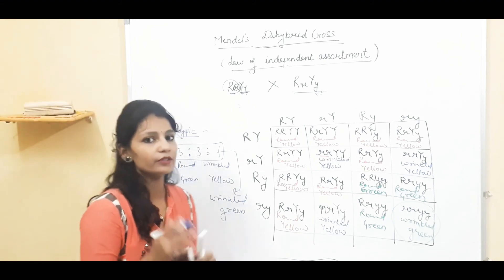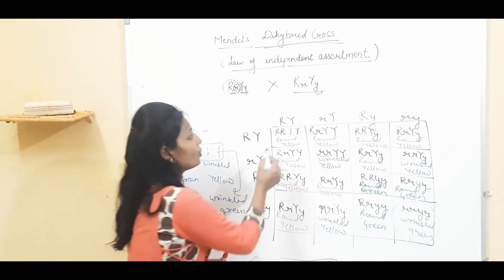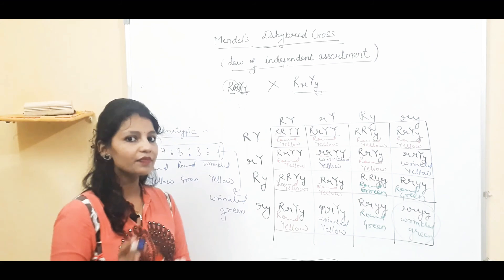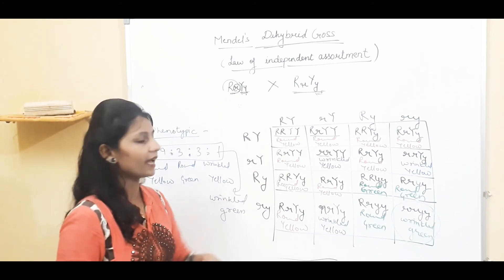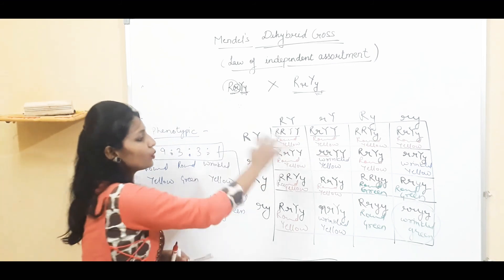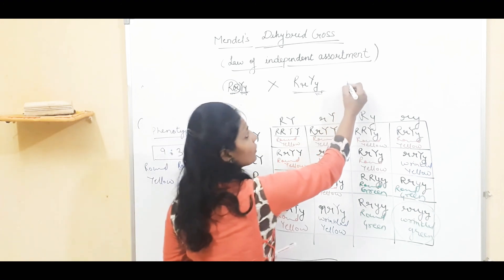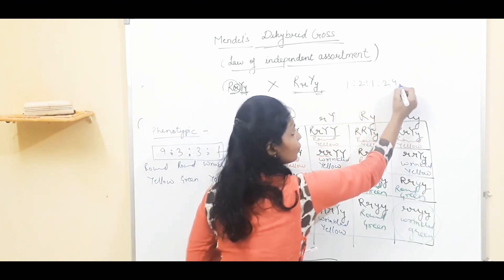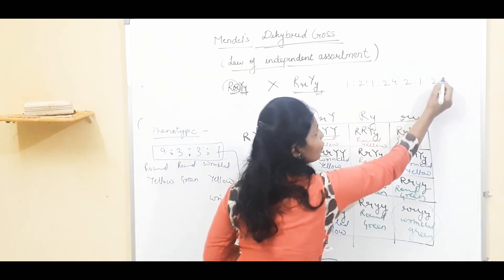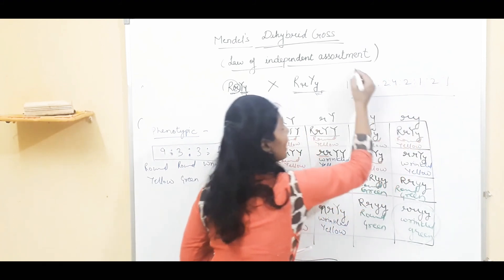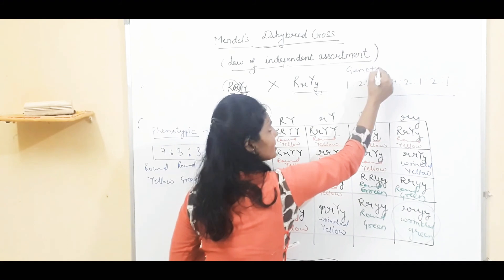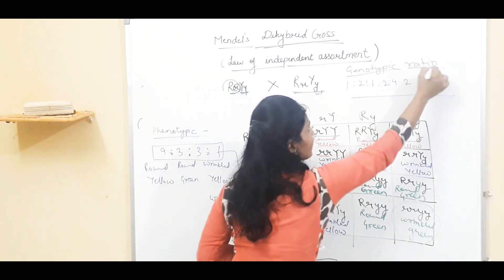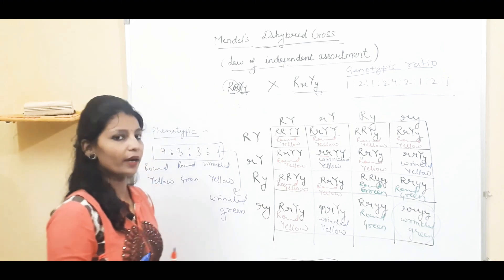If students want to find the genotypic ratio, you can see that some plants have the same phenotype but different genotypes. The genotypic ratio of this whole cross is 1:2:1, 2:4:2, 1:2:1. You can remember this — it is the same ratio pattern from monohybrid cross applied in two dimensions.